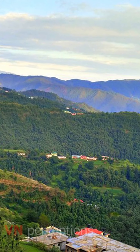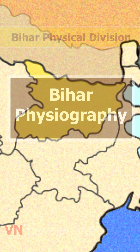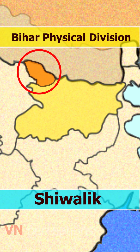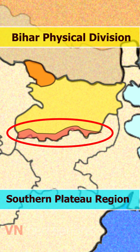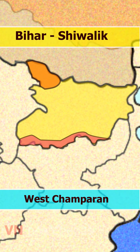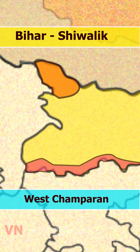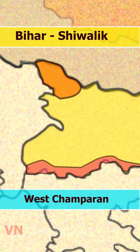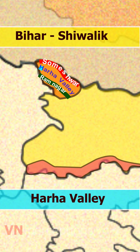In this section, we shall learn the physiographic divisions of Bihar. Bihar is broadly divided into: the Shivalik Range, the Bihar Plains and the Southern Plateau regions. The Shivalik Range is located in the northwestern part of West Champaran. It spreads over a length of 32 kilometers and width of 6 to 8 kilometers. Based on local variation of topography, it can be further divided into the Someshwar Range, Ramnagar Doon and Haraha Valley.